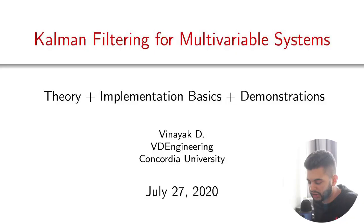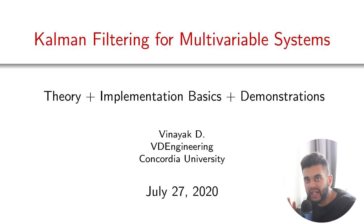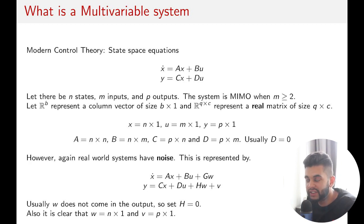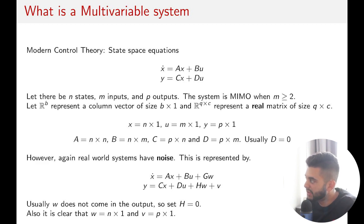To begin with, we have our state space model: x-dot is equal to Ax plus Bu, and y equals Cx plus Du. I've covered this before in many videos. If you have n states, m inputs, and p outputs, x equals n-by-1, y equals p-by-1, u equals m-by-1, and the matrices A, B, C, and D have the appropriate dimensions.